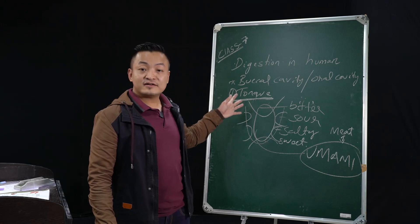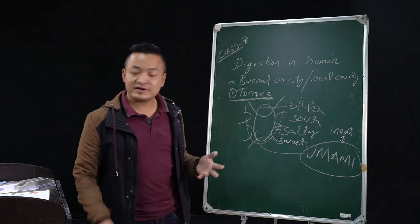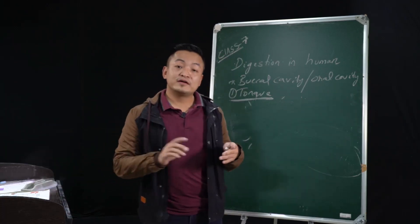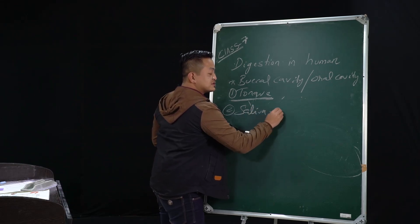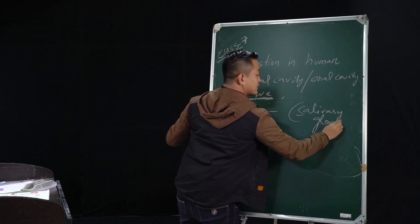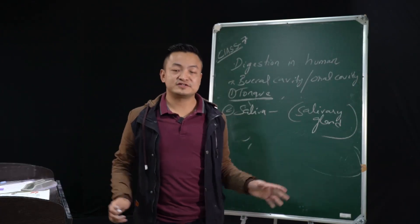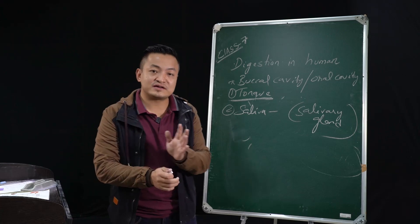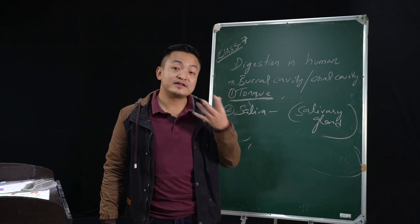Now let's talk about saliva. Saliva is secreted from the salivary gland. Saliva helps us with many functions — it helps in mixing food when we chew, it also helps in swallowing, and saliva also helps in healing wounds inside the mouth.